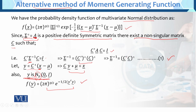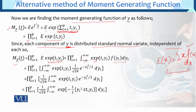So pi for i from 1 to p, integral minus infinity to infinity of exponential t_i y_i times f(y_i) d y_i. We substitute the value of f(y_i). Further simplification: the constant factor is taken outside the integral. Then we have expected value of t_i y_i and the remaining part as it is. When two exponentials multiply, they go to addition form.